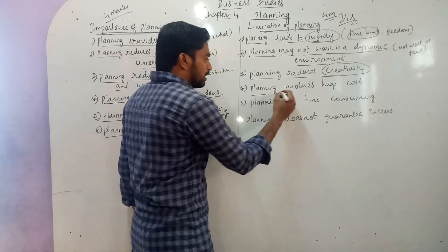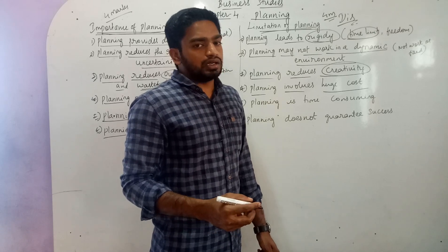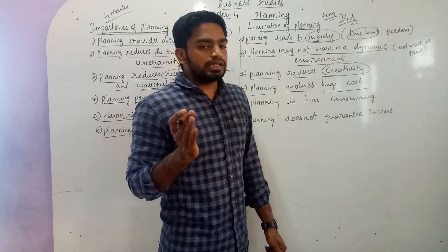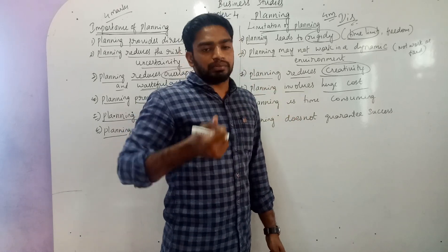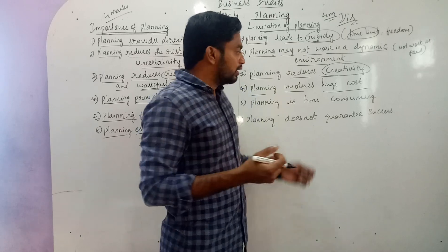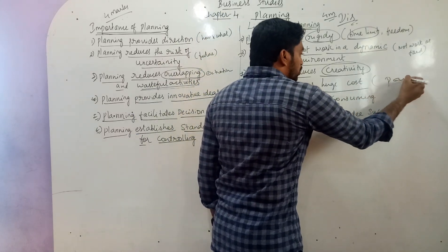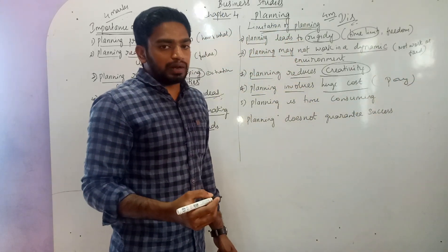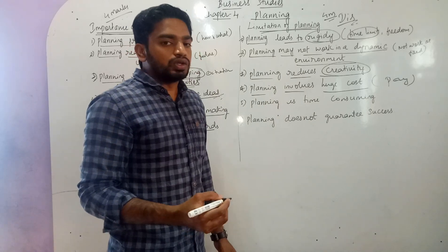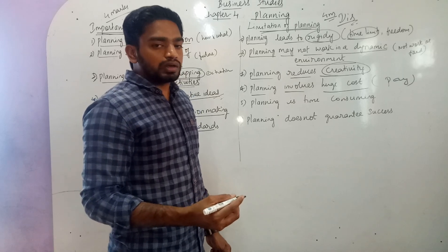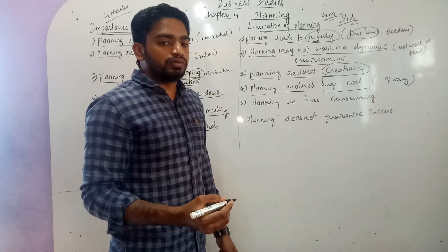Fourth limitation: planning involves huge cost. For making a plan, there is a huge cost incurred. It is not easy to make a plan, not easy to make assumptions, and not easy to carry out the related activities. Planning involves more money and more payment for the planners. Without perfect planning we cannot survive, but planning does involve a significant financial cost for the organization.